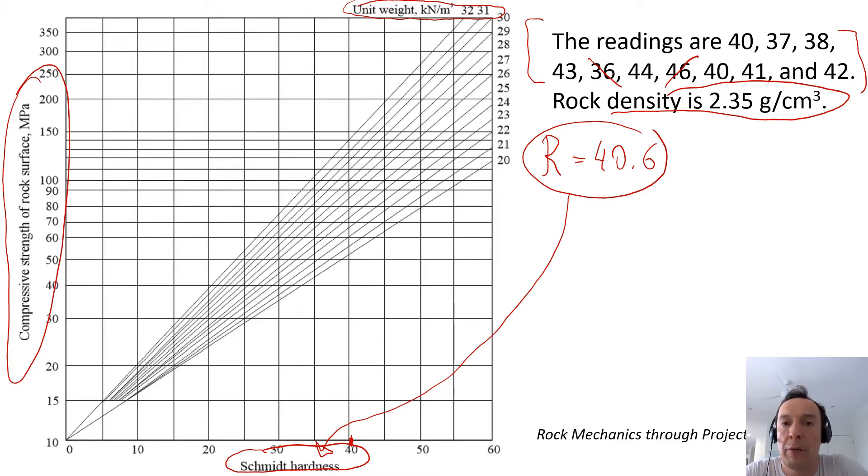Now we need to find the unit weight of rock. You probably already know by now how to find the unit weight if you know the density. Our unit weight is density times g. In this case we have 2.35 times 9.81, which will give us approximately 23.1 kilonewtons per cubic meter.